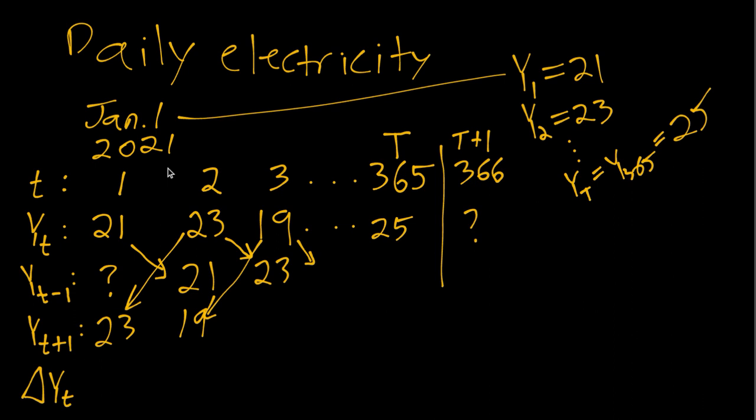So given our table up here we can do that subtraction. We'll notice when t equals one, the first lag we don't know so we can't compute the first difference either. But then when t equals two, we observe both the original value and the first lag. If we take the difference 23 minus 21, we get two. We'll fill in that question mark. Similarly for t equals three, 19 minus 23. Now we get a negative value minus four.